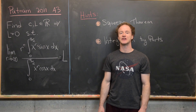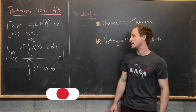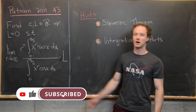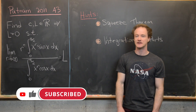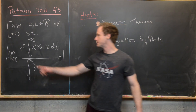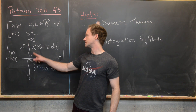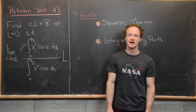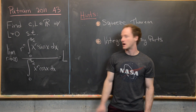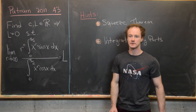Here we're looking at a solution to question A3 from the 2011 Putnam exam. Our goal is to find real numbers C and L, where L is positive, such that when we take the limit as R goes to infinity of R to the C times the integral from 0 to π/2 of x to the R sine x dx, divided by the integral from 0 to π/2 of x to the R cosine x dx, we get L.